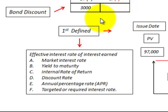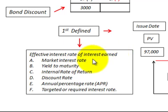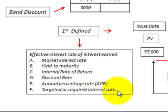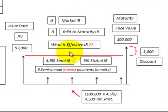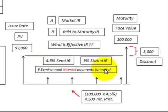The effective interest rate is the interest earned on this bond. It is also known as the market interest rate, yield to maturity, internal rate of return, discount rate, annual percentage rate, and the targeted required interest rate. For our bond, we have a $100,000 face value at maturity and six semi-annual payments at a stated rate of 4.5%, or 9% per year.